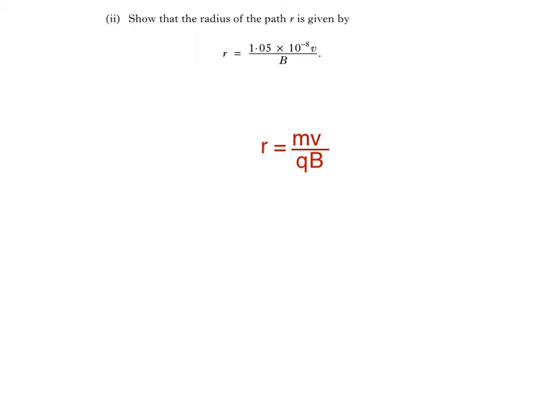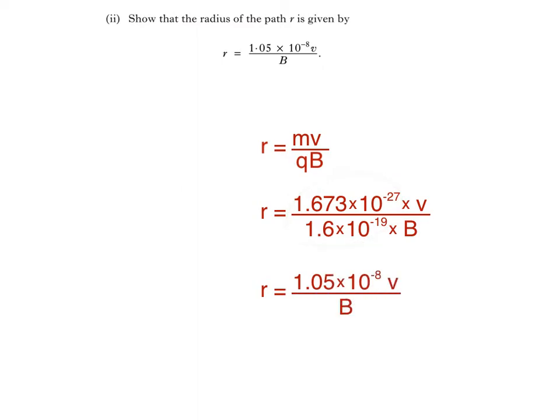At this point, we look to the data sheet at the front of the paper for the mass of the proton and its charge, which has the same magnitude as the charge on an electron. Substituting these values, we get this. We can then divide these two numbers, which works out to be 1.05 times 10 to the negative 8, thus giving us the required equation.